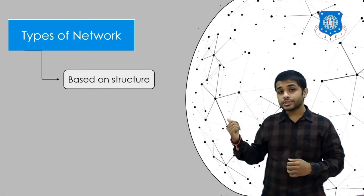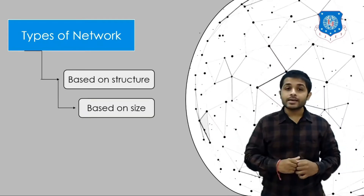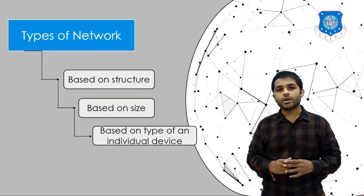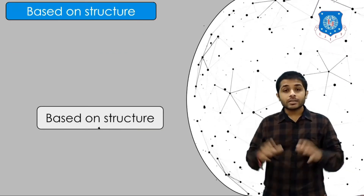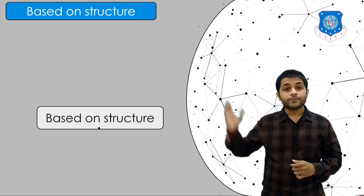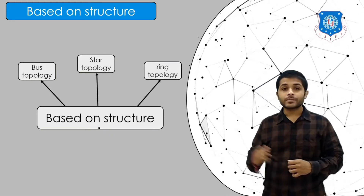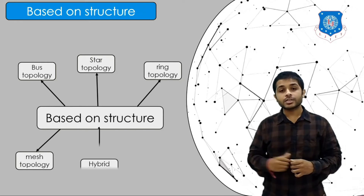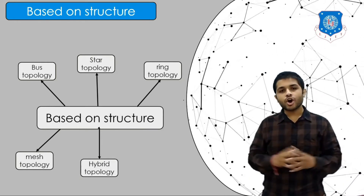The network is divided into three types: first, based on structure; then based on size; and based on the type of an individual device. Let's see all of them one by one. Based on structure, the network is divided into five types: bus topology, star topology, ring topology, mesh topology, and hybrid topology.